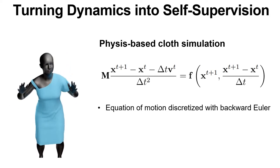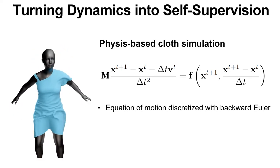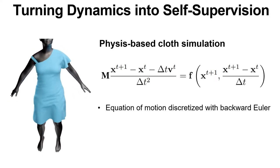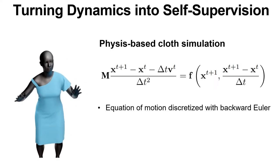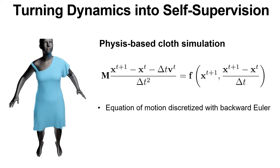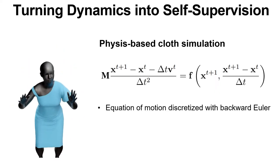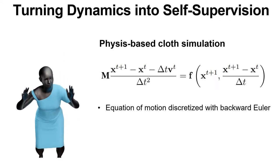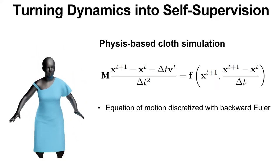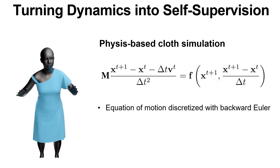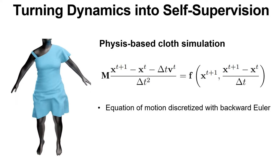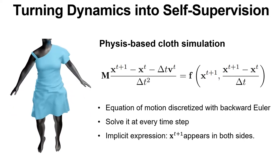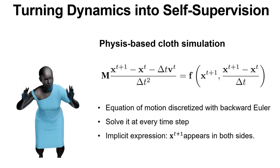Here, M is the mass matrix, F are the forces, and X and V are the positions and velocities of the garment vertices. Most physics-based simulation methods solve this expression at every time step. But since this is an implicit expression, it requires the use of expensive integrative schemes.